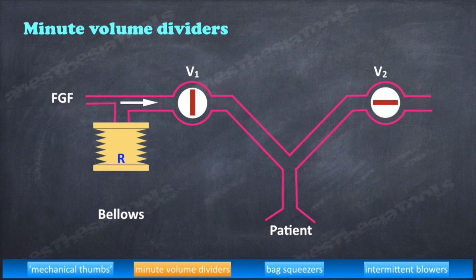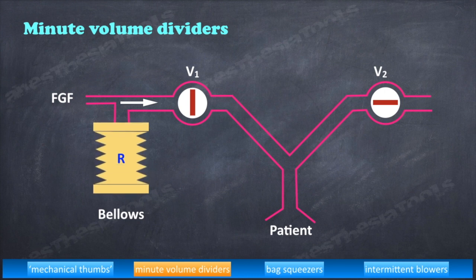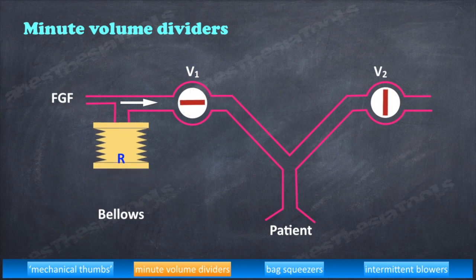You can find two valves, V1 and V2. They are linked together and operated by a bi-stable mechanism. That means when one is open, the other one will be closed. When V1 opens, V2 closes and causes the reservoir to discharge gas to the patient. This is the inspiratory phase.